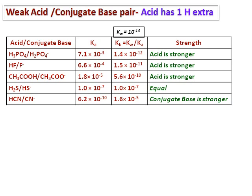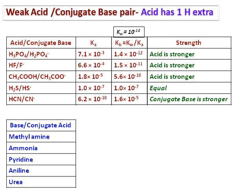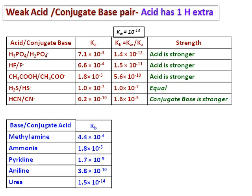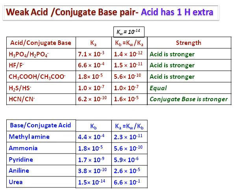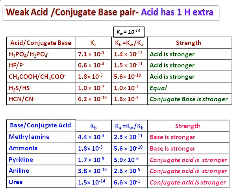Similarly, consider base and conjugate acid pairs. The bases are listed, and the conjugate acids are those with one extra hydrogen. The Kb values of the bases are given and the Ka values are calculated. Comparing Kb and Ka: methyl amine is stronger than its conjugate acid because its Kb is larger; ammonia is also stronger. For pyridine, it is the acid part that is stronger; for aniline and urea, it is the conjugate acid that is stronger. To determine which is stronger, compare Ka and Kb — whichever is larger, that one is stronger.